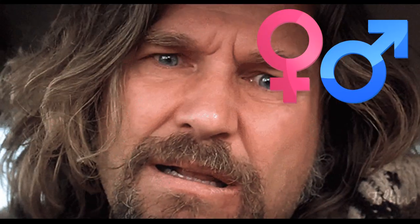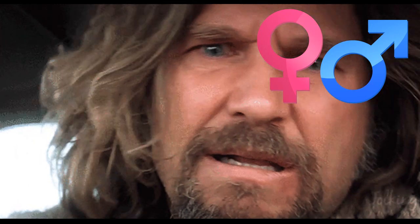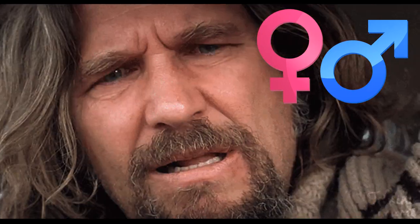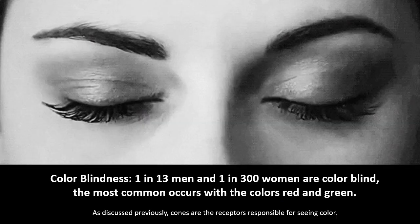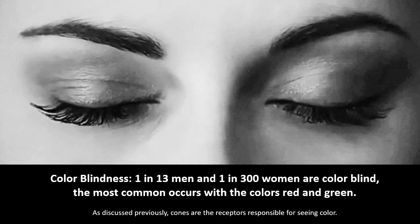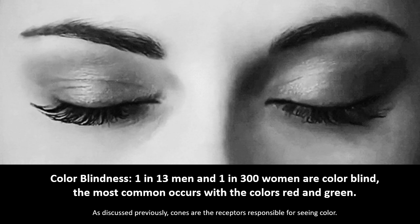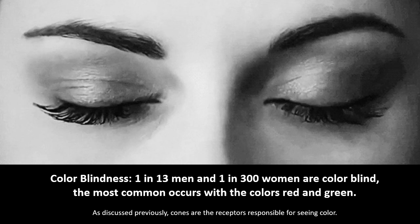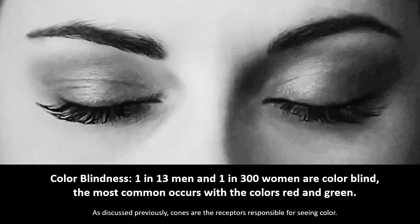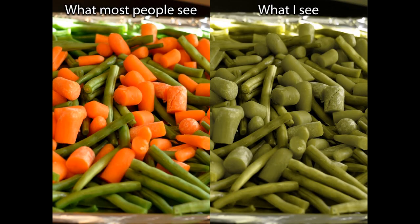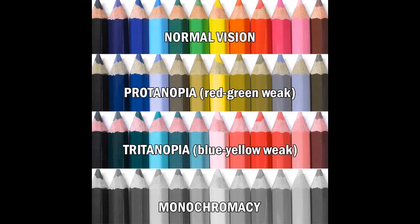Fayol, is there a biological difference between how men and women might perceive color? Well, there might be. Color blindness affects 1 in 13 men and 1 in 300 women. The most common form of colorblindness is red and green. So what most people see might be very different from what people see who are colorblind. Here's an example of being able to see the full color spectrum versus being completely colorblind, or being red-green weak or blue-yellow weak.